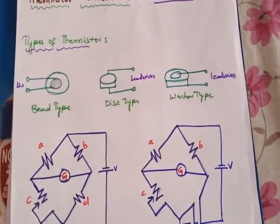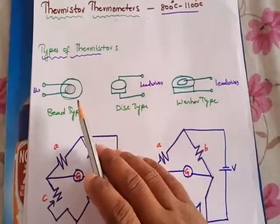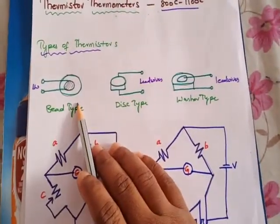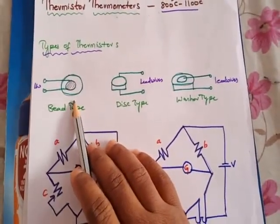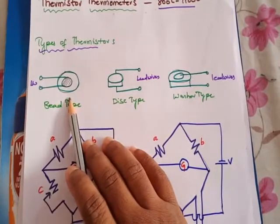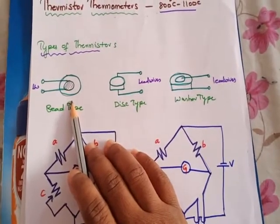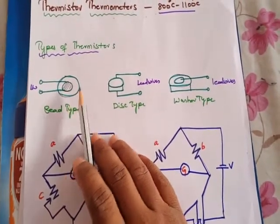The materials used in the preparation of thermistors are oxides of powders, which are especially copper, iron, uranium, and nickel.